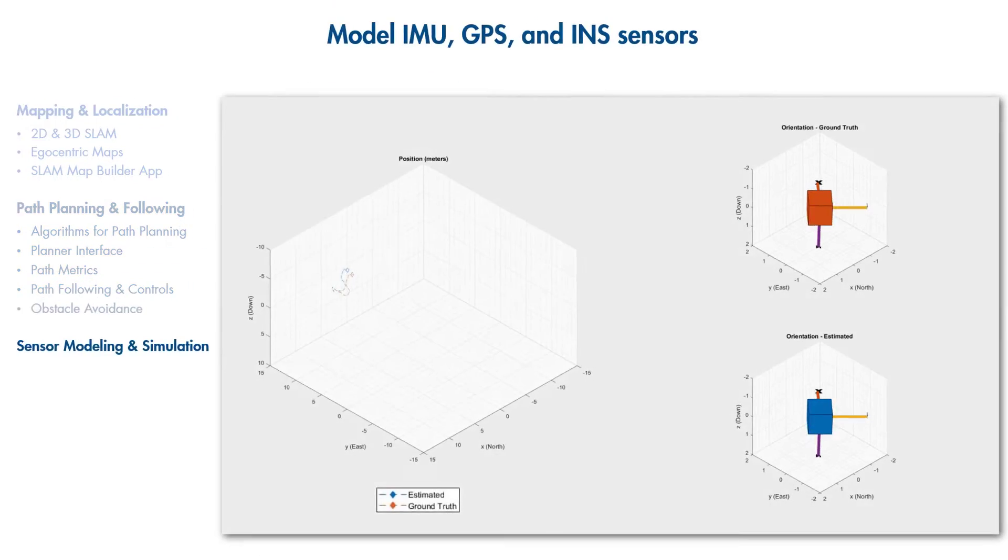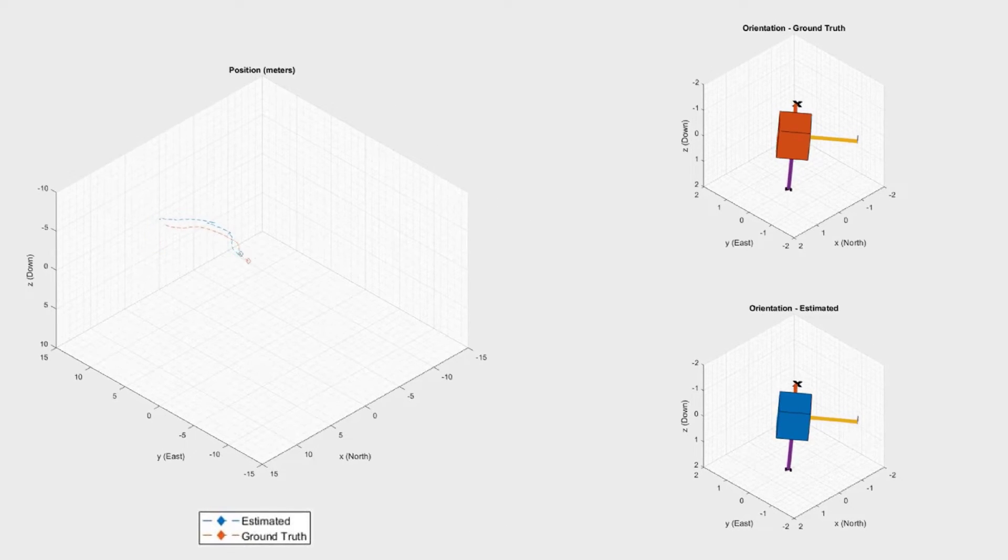In addition, simulated sensor models for GPS and IMU sensors let you tune parameters such as temperature and noise to emulate real-world conditions.